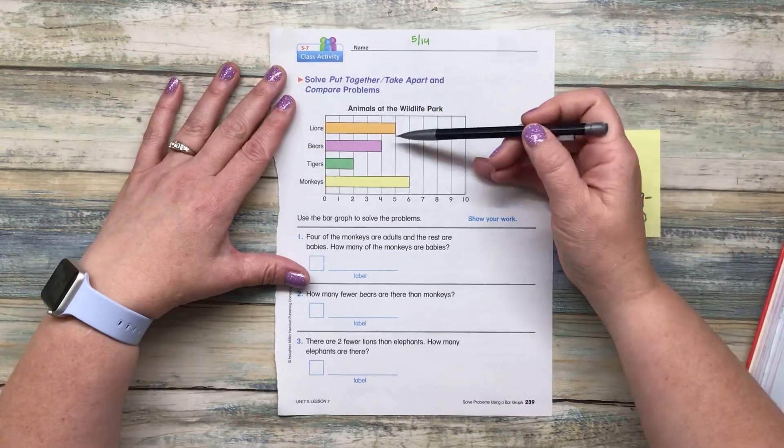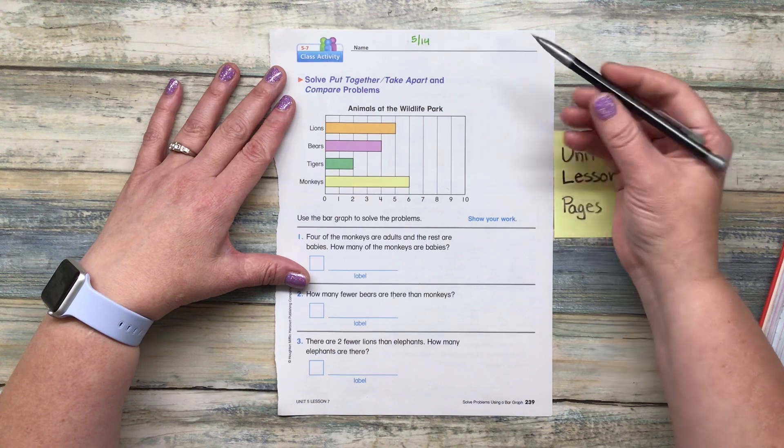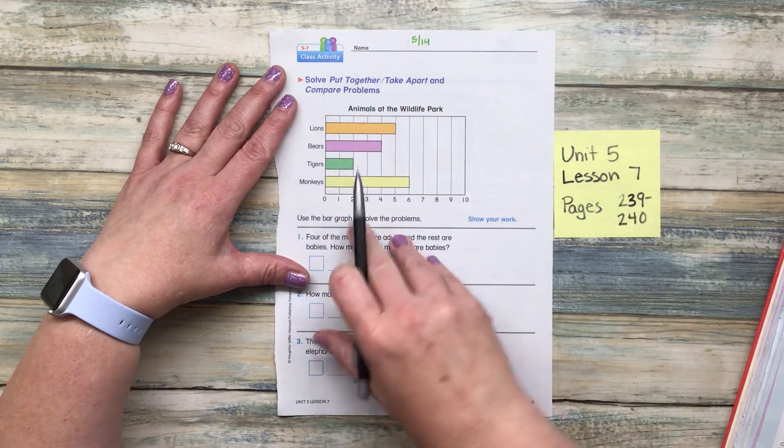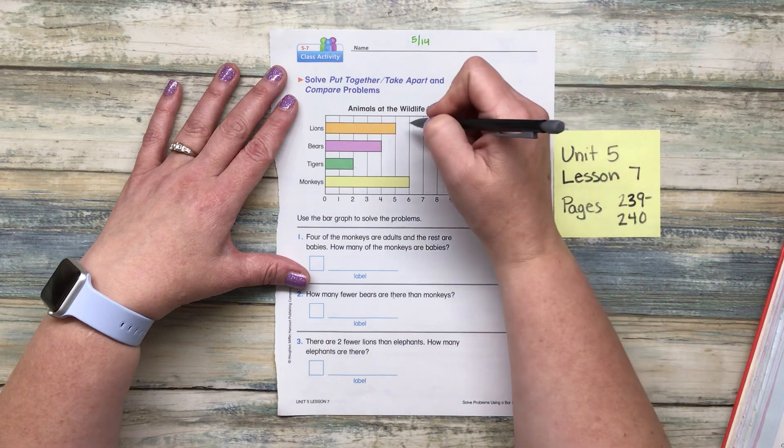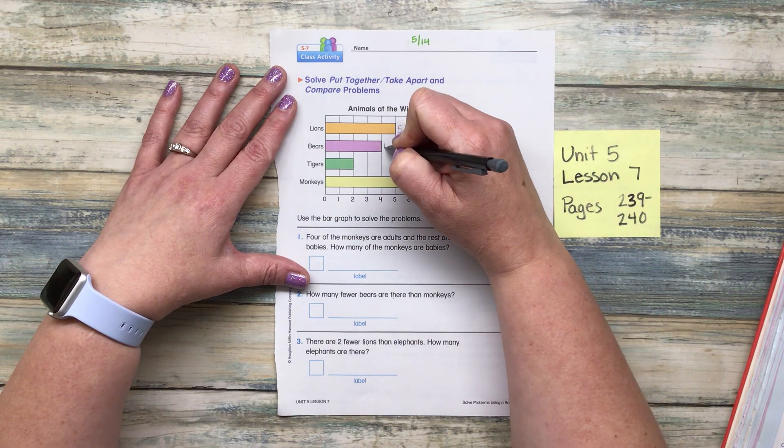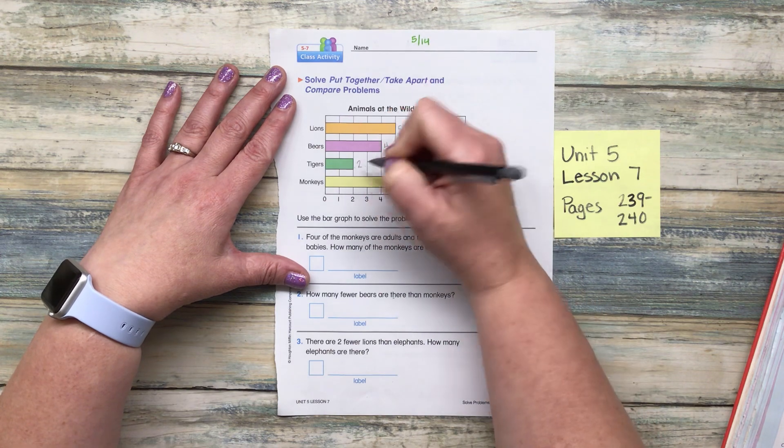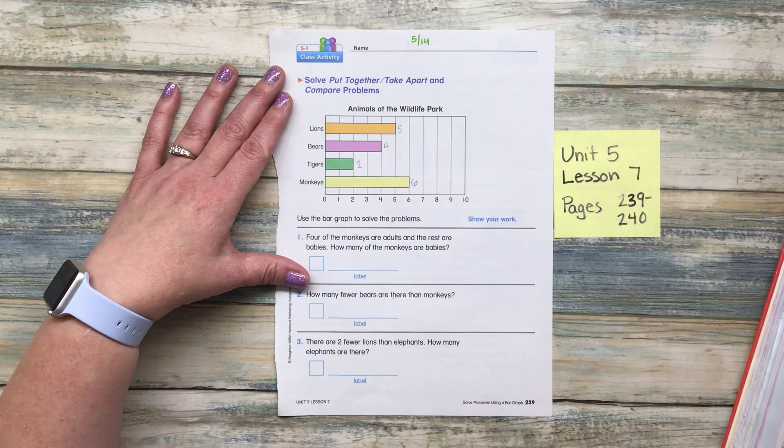Yep. You got it. We're going to go ahead and we're going to put our numbers down right there. And they already did the lines up and down. So I'm not going to do that this time because I can see that really easy.